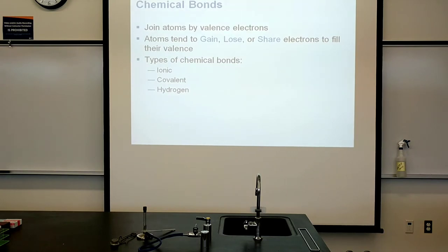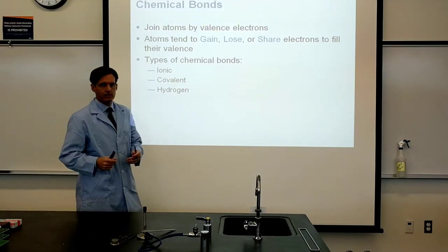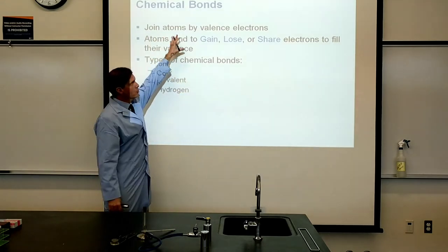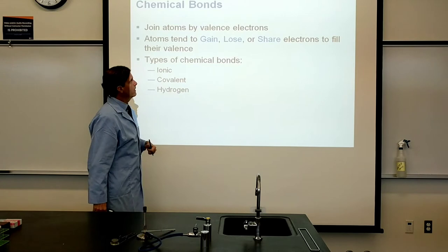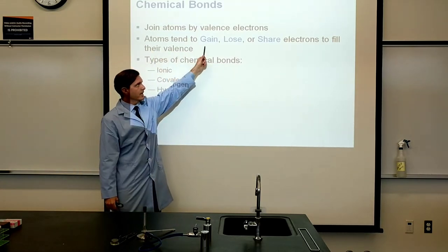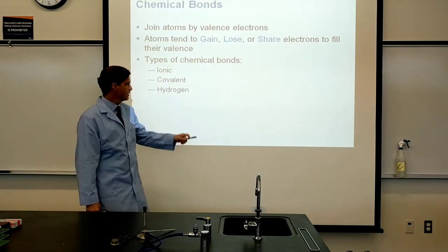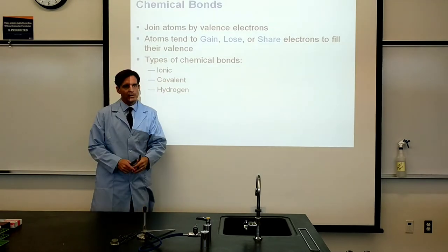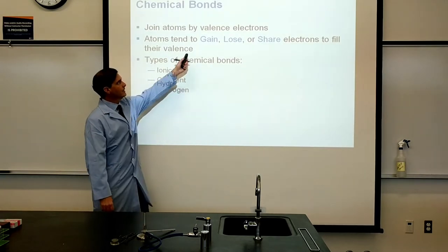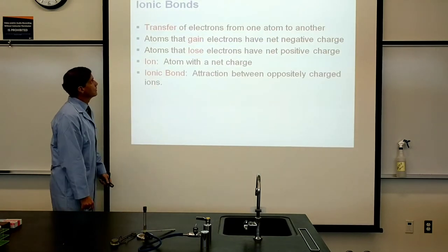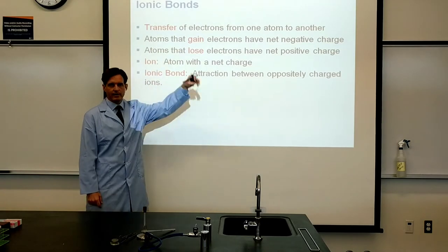When we talk about chemical bonds, we're talking about a rearrangement of those electronic configurations. Atoms join through rearrangements of valence electrons — they can either gain, lose, or share electrons depending on the types of bonds that form. We'll go over all three types of chemical bonds. Let's start with ionic bonds.